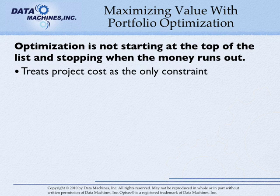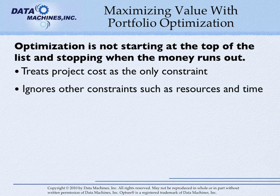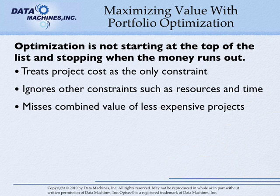Besides the fact that this approach treats project cost as the only constraint and ignores other constraints such as resources and time, what if there were several projects below the one where you stopped that would together deliver more value than one of the selected projects and also cost less? You'd miss that value entirely.